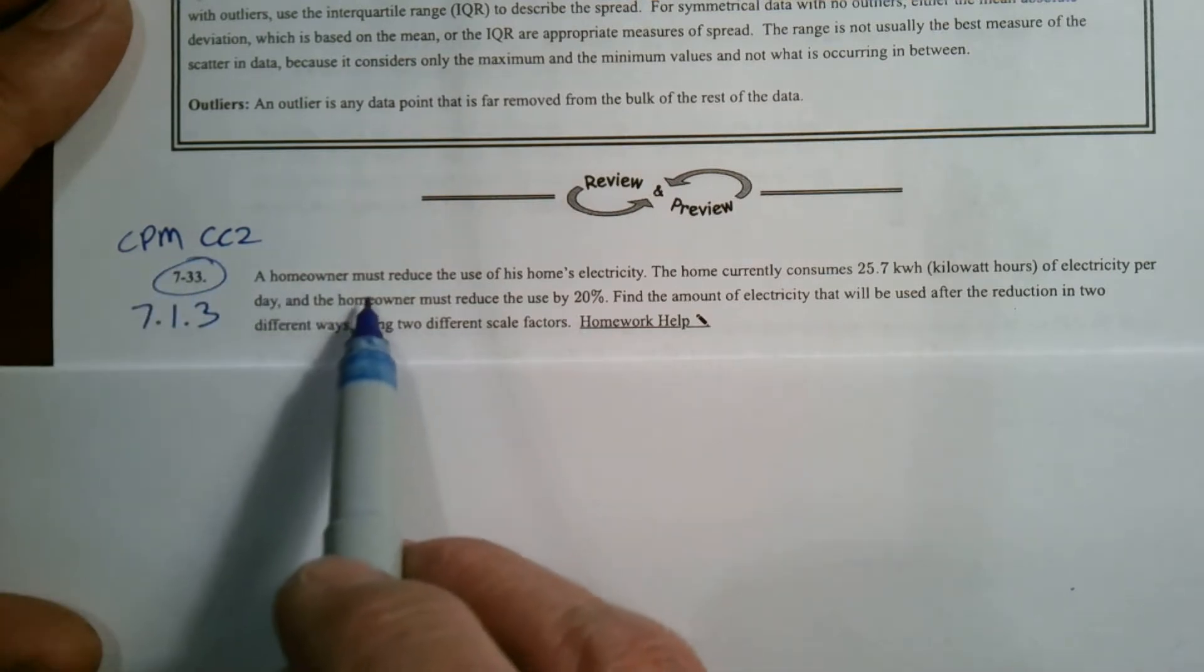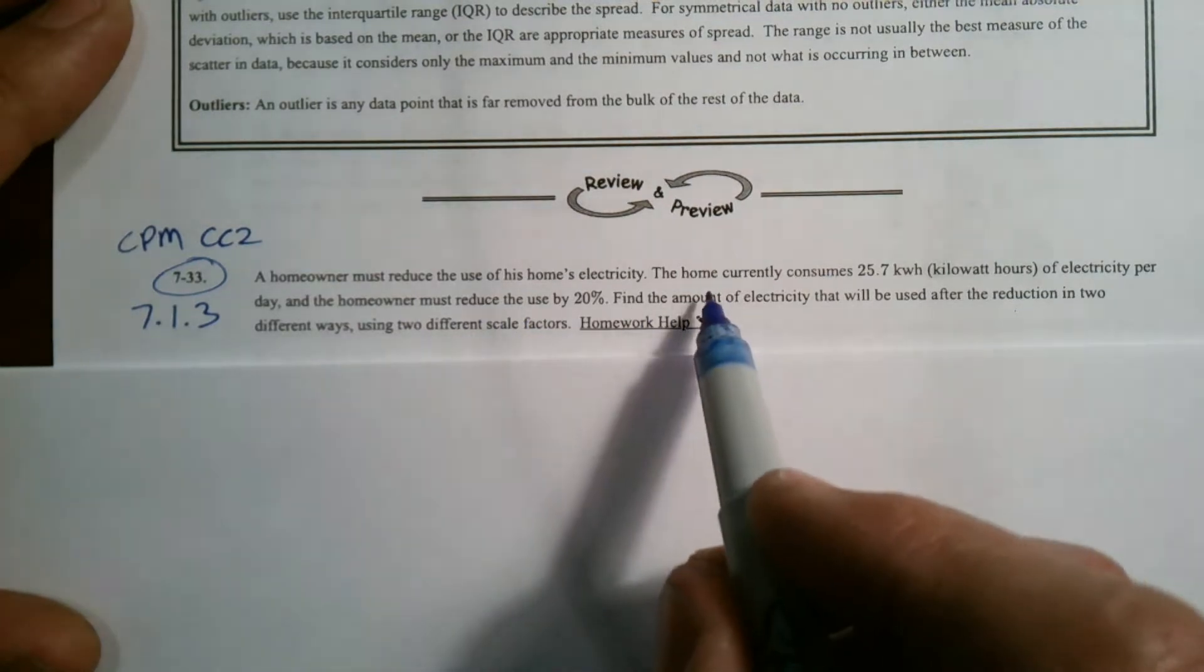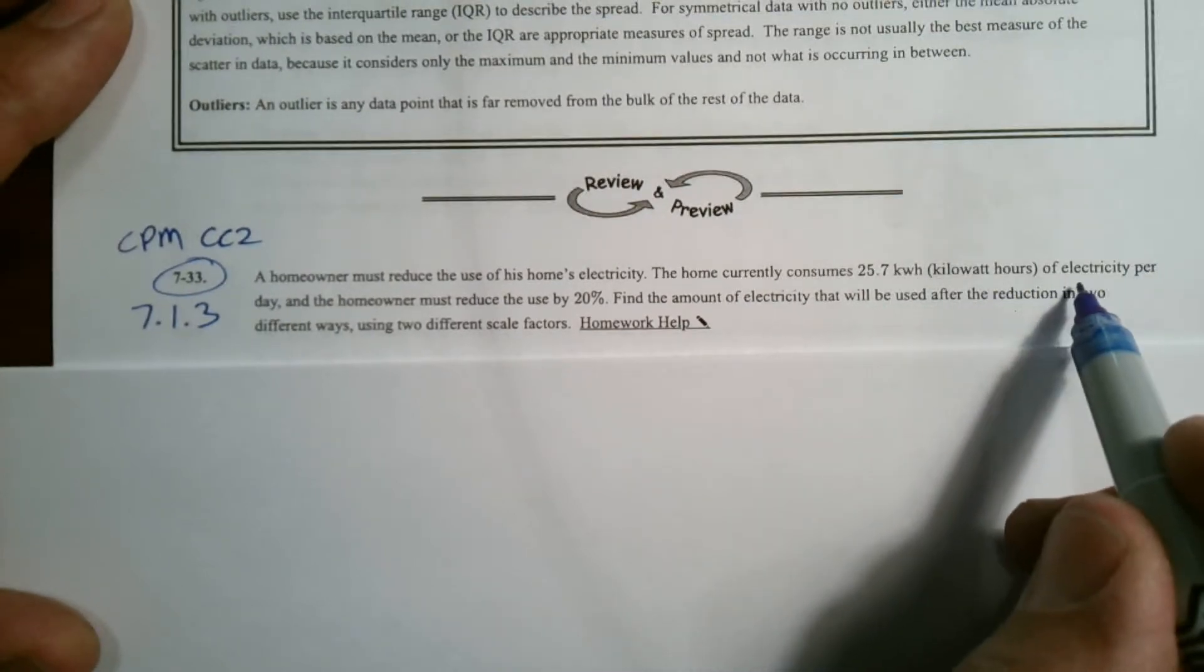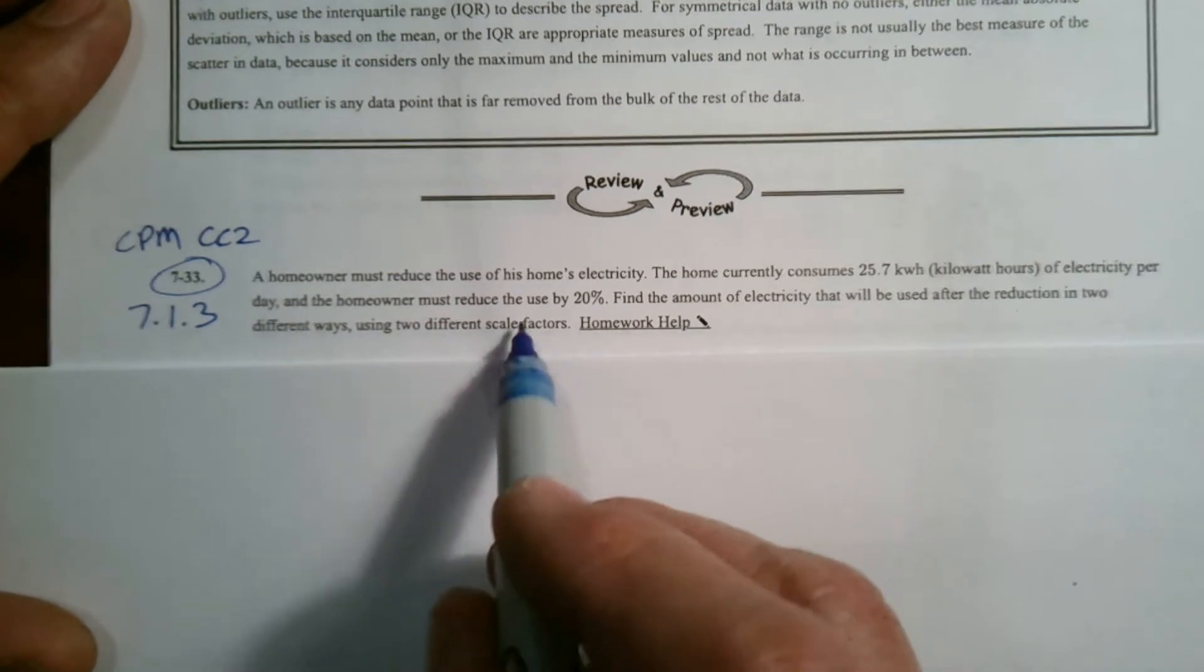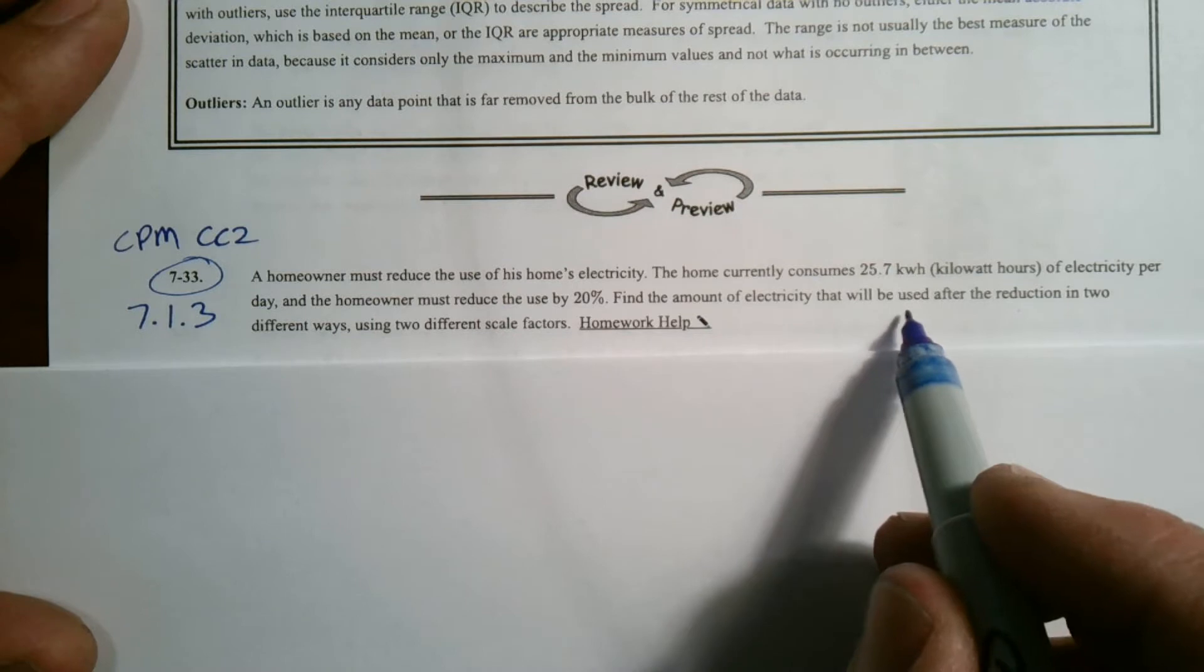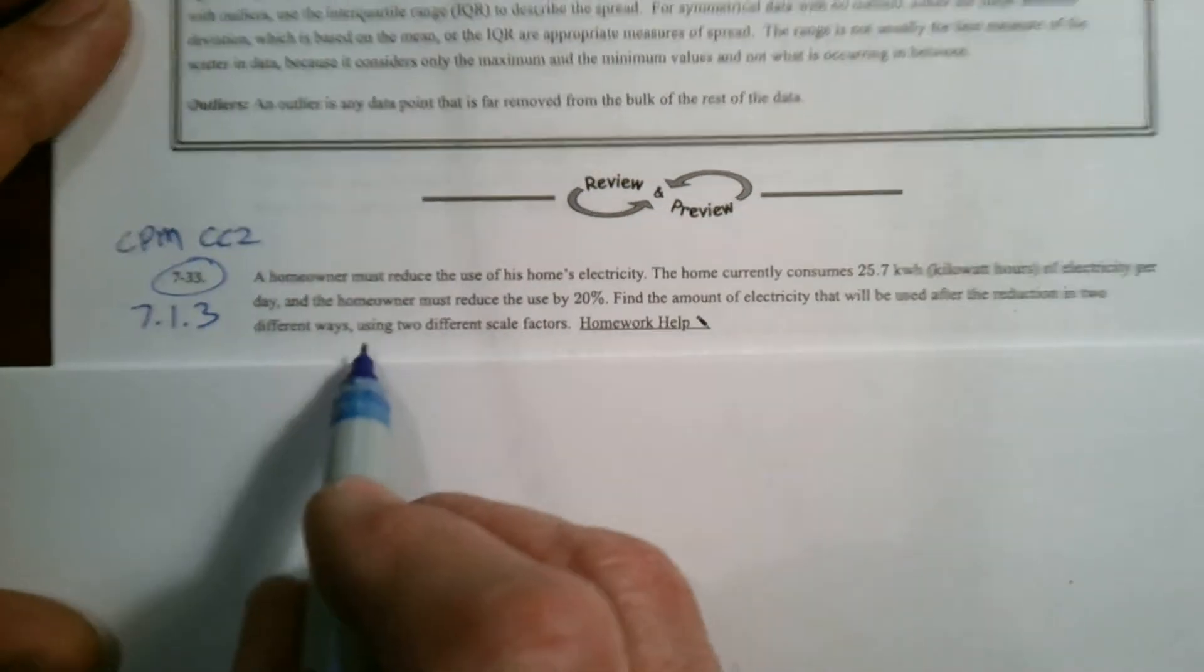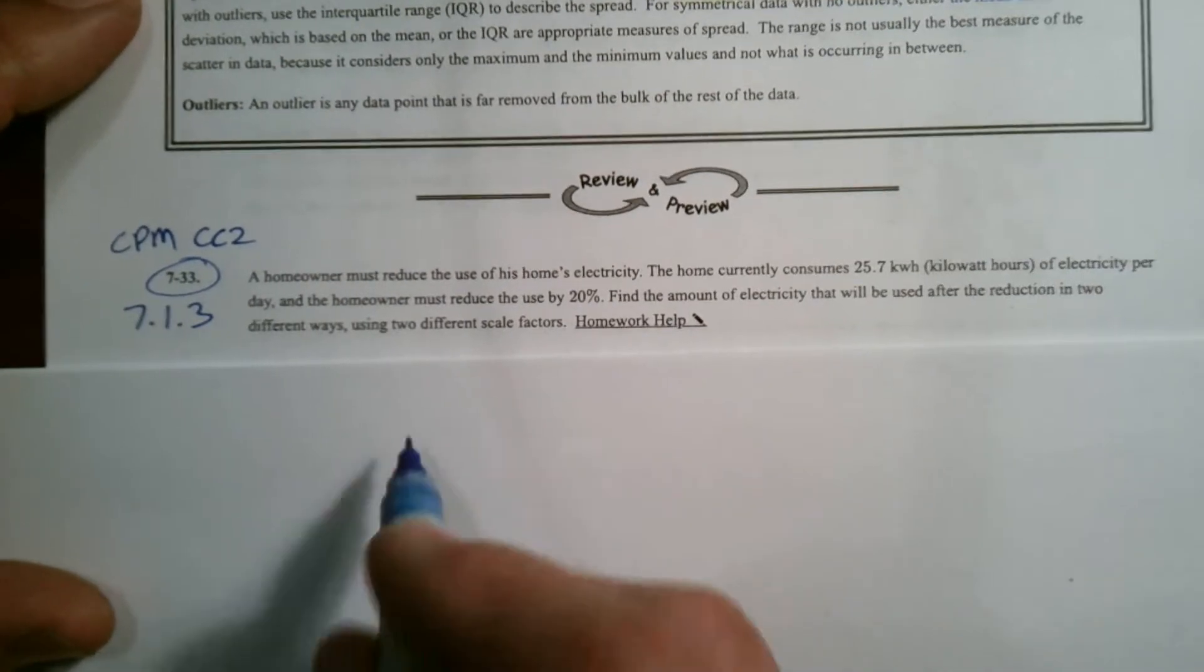So let's read it. A homeowner must reduce the use of his home's electricity. The home currently consumes 25.7 kilowatt hours of electricity per day, and the homeowner must reduce the use by 20%. Find the amount of electricity that will be used after the reduction in two different ways, using two different scale factors.